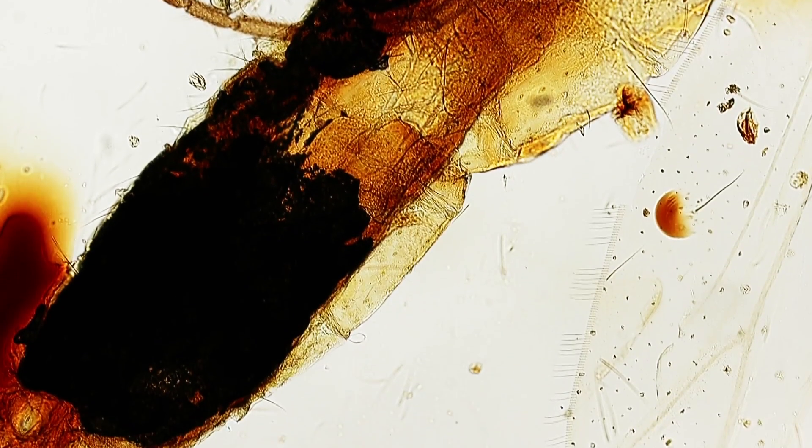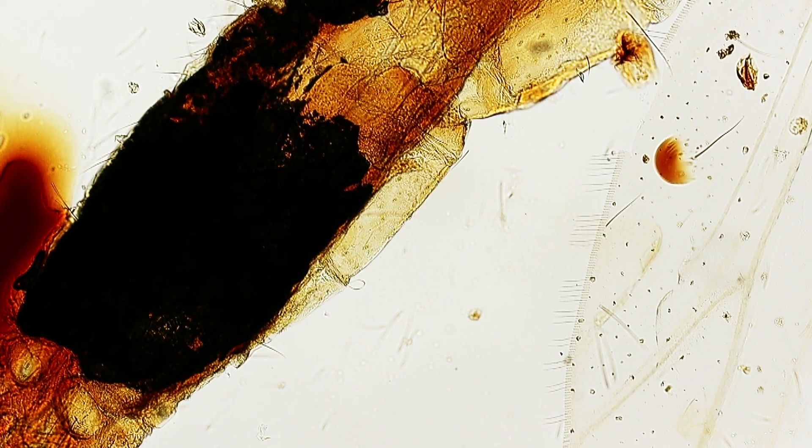But that's not really the problem here, because there are dark spots and bubbles inside the insect, and these dark areas, they aren't just shadows or strongly pigmented areas.